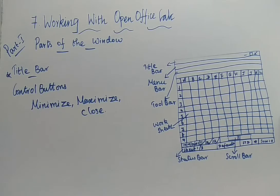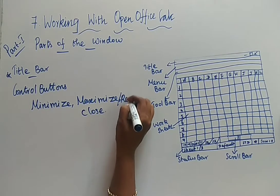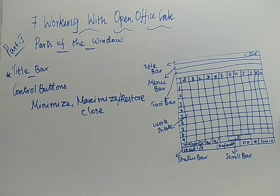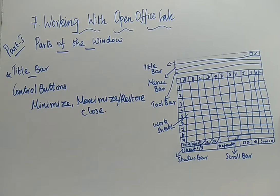The Minimize button — just by clicking that, the whole spreadsheet will be minimized to the taskbar. Next you have the Maximize button, otherwise it is your Restore button. Maximize makes the screen somewhat bigger. Restore fits the screen — the screen will be enlarged. Next is Close — you can close the current document or close the whole application. Those are your control buttons, the three buttons available in the right corner of the title bar.